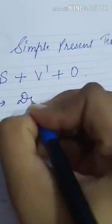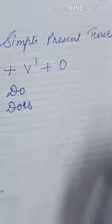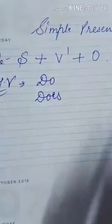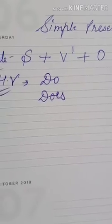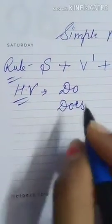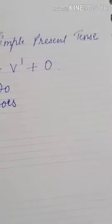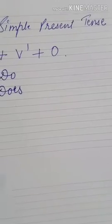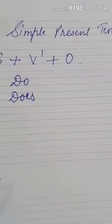By writing, you will understand more. The rule is: subject plus first form of the verb, then object. The helping verbs are 'do' and 'does'. We use this tense for habitual actions — things we do regularly — and also for universal truths and facts.